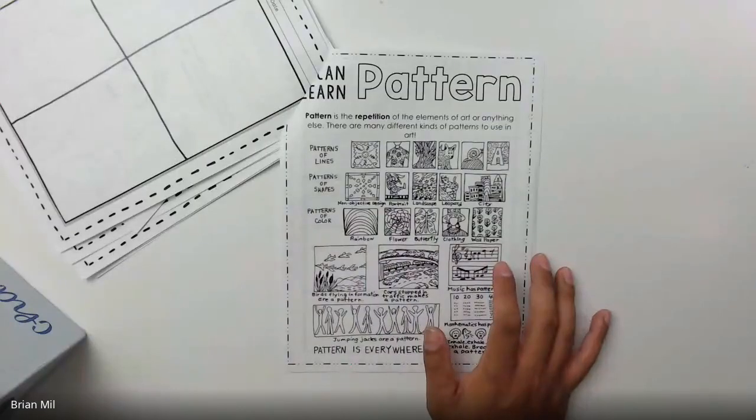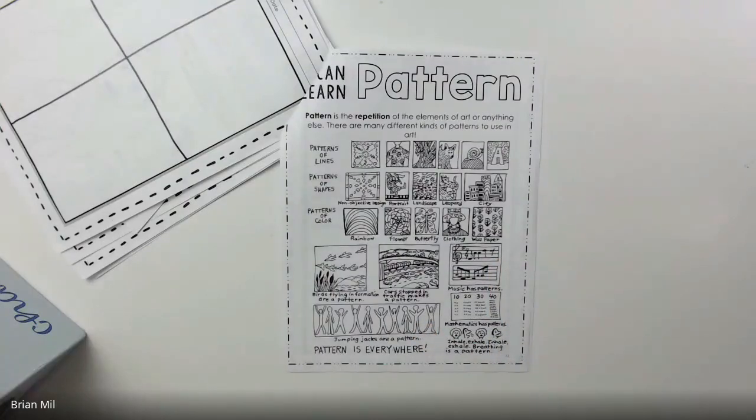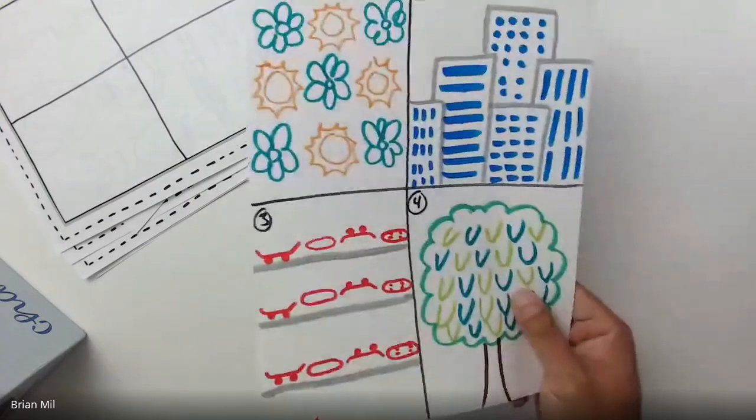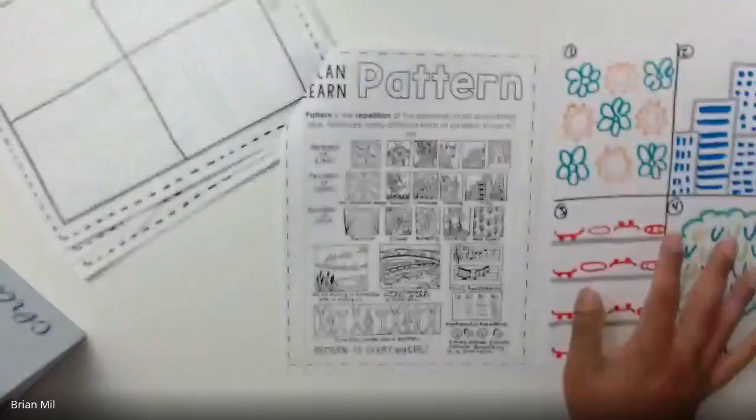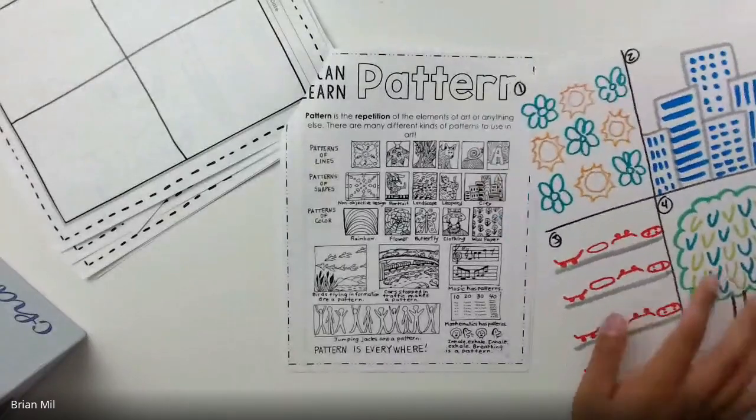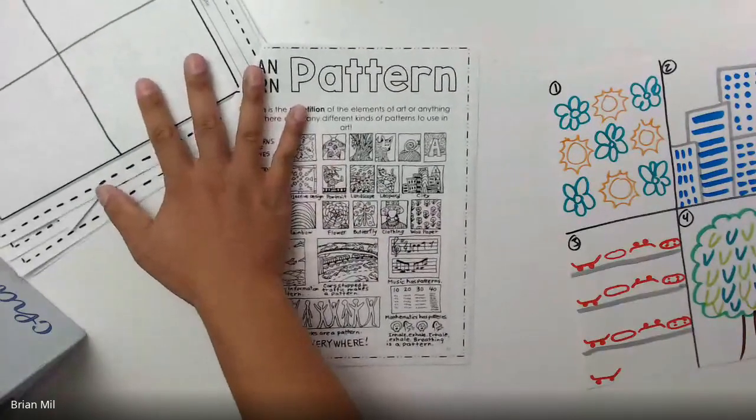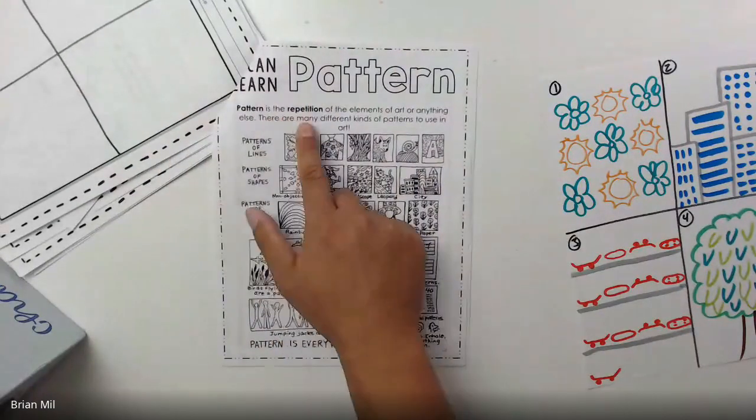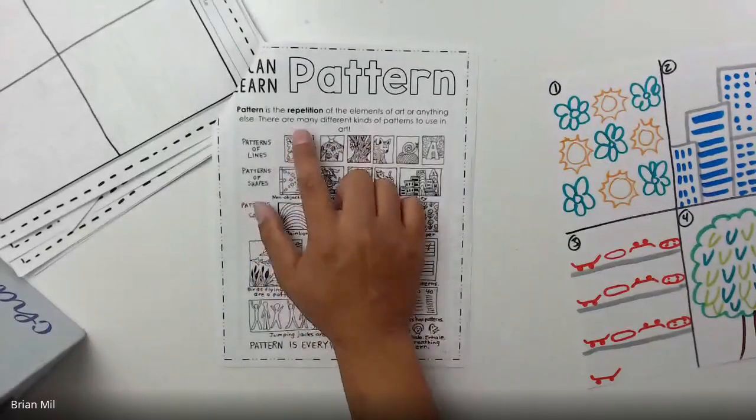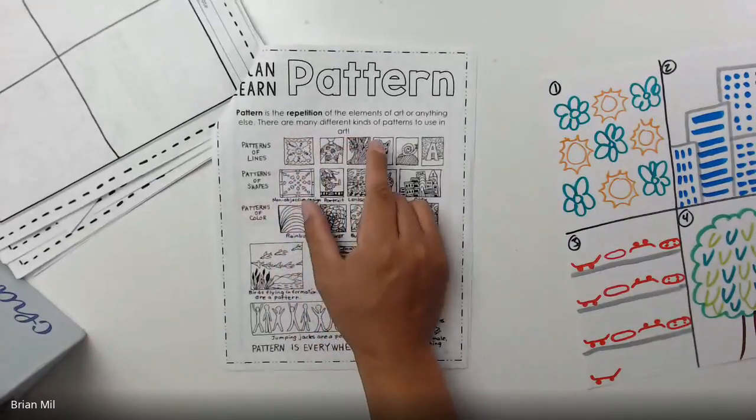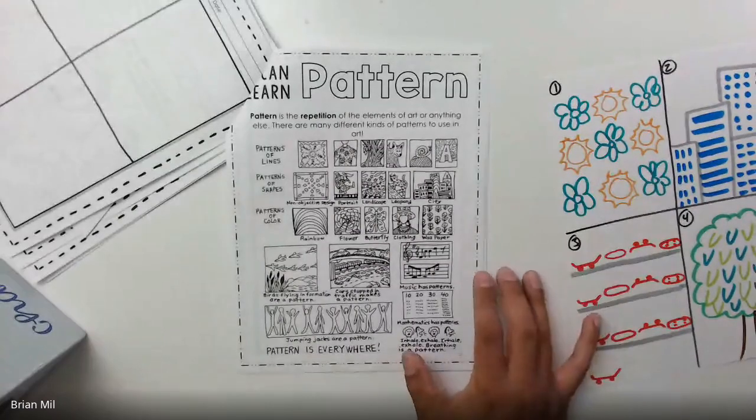Pattern. Yes, I can't find my packet. That's okay, just make sure you have a blank sheet of paper. As you can see, I can do it on my blank sheet of paper too. So a blank sheet of paper will work. I have my sketchbook. Okay, sketchbook will work. This is fine. I got to get started. I wasted too much time. Here we go. Pattern is a repetition of the elements of art or anything else. There are many different kinds of patterns to use in art. So there's a couple of examples here. Let's go over all of them.